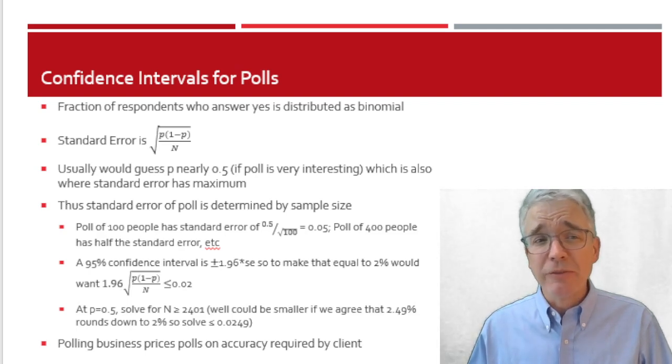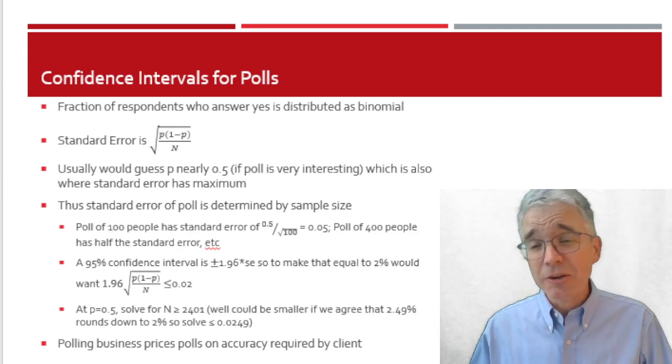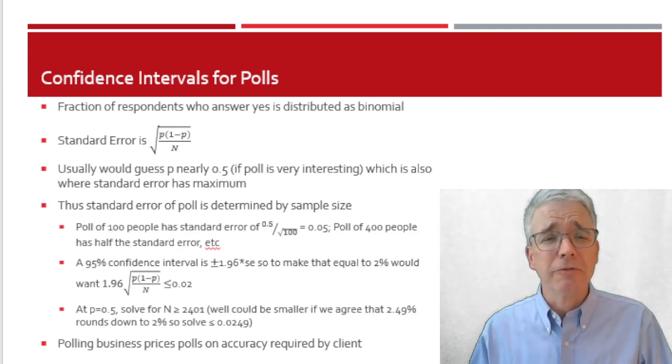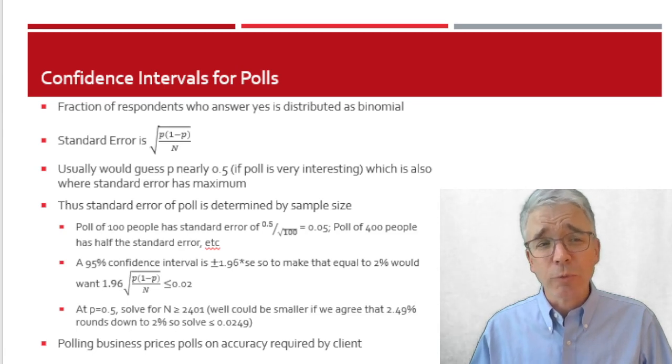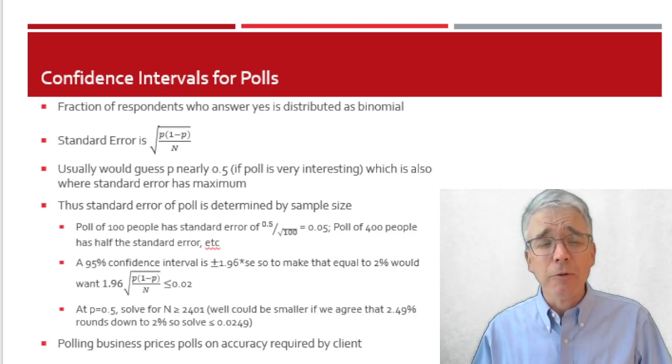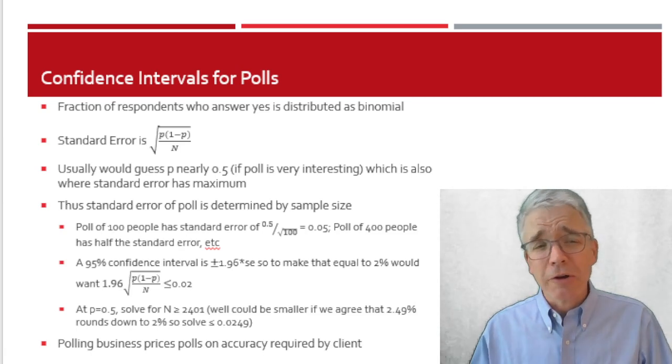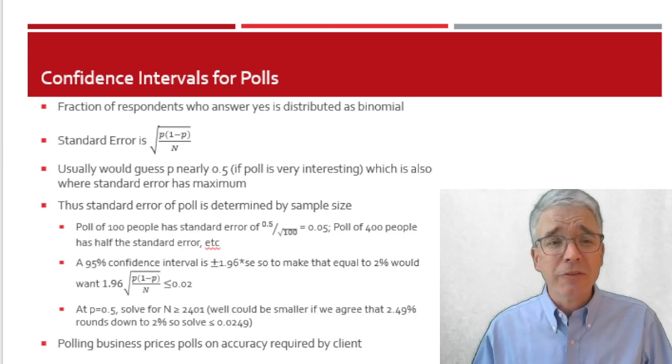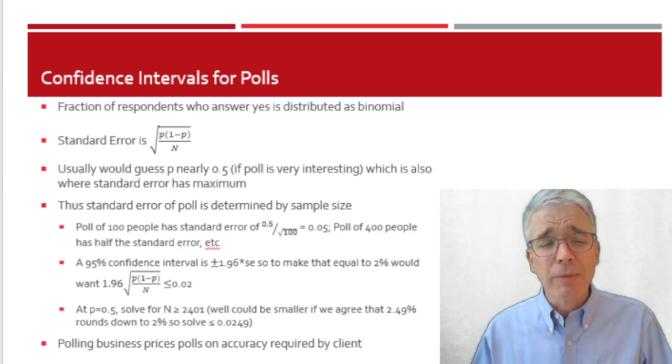So the standard error there is the square root of p times 1 minus p divided by n. Typically, p is going to be near 50% because most polls are looking for issues that are controversial with plenty of people on both sides. An interesting poll is going to have a probability close to 50%. That's also where the standard error has its maximum value. So if we want to be a little bit conservative, then standard error formula just set p equal to 0.5.